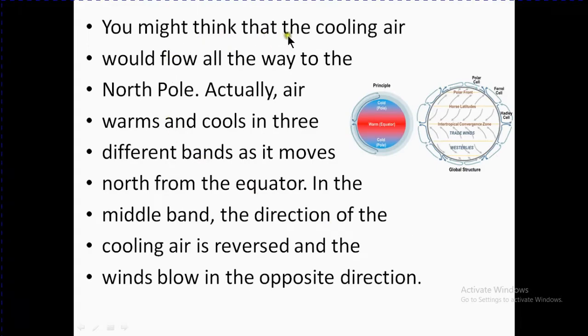You might think that the cooling air would flow all the way to the north pole. Actually, air warms and cools in three different bands as it moves north from the equator. In the middle band, the direction of the cooling air is reversed and the winds blow in the opposite direction. Here it's showing the direction and the bands of the air.